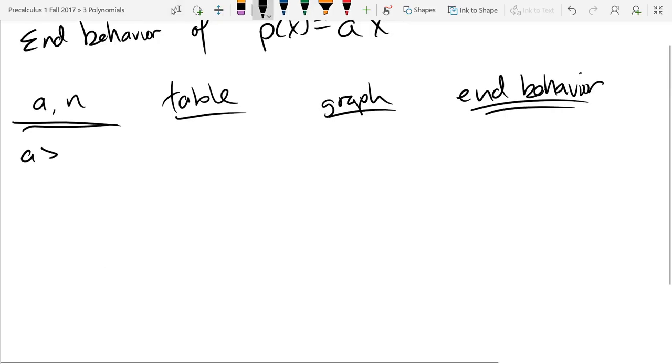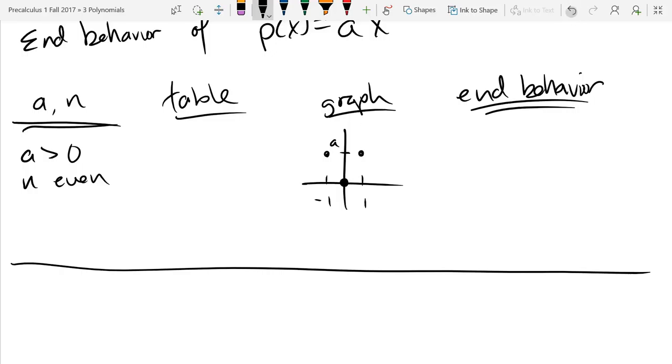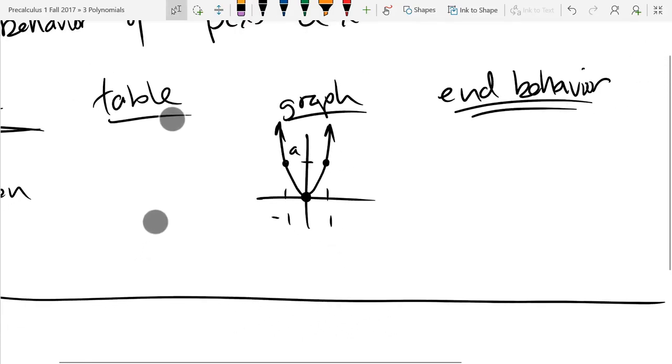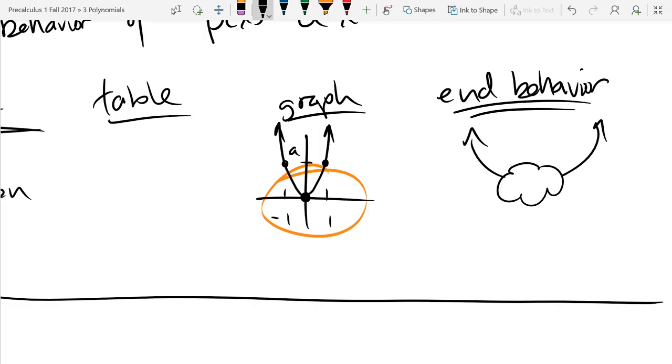So we saw a positive and even. I'm not going to repeat the table, I will redraw the graph. We got 0, 0, and wherever a was. We got two points, and this is supposed to look similar to a parabola. So there's the graph, end behavior. Just ignore the center part of the graph, and the end behavior, stuff happens in the middle, and it goes up on both sides like that.